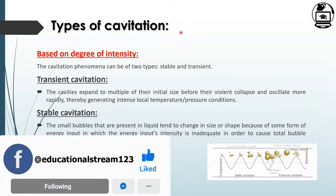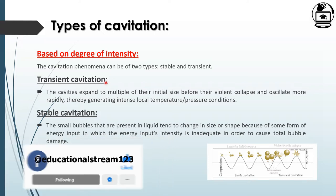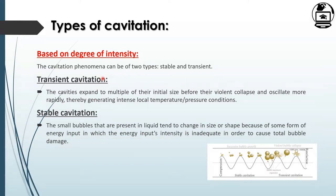Based on degree of intensity, cavitation is of two types: transient and stable. Transient cavitation involves cavities and bubbles that exist for a short span before violent collapse. They oscillate more rapidly, and this collapse causes the generation of intense local temperature and pressure conditions.